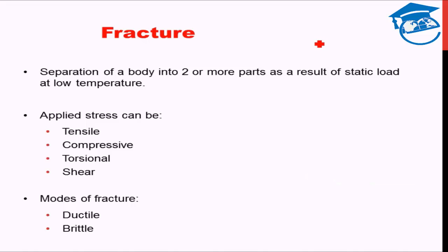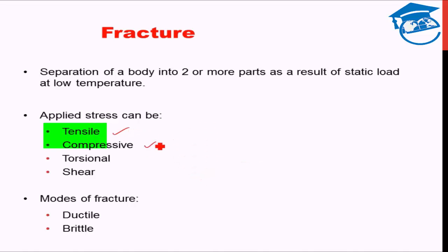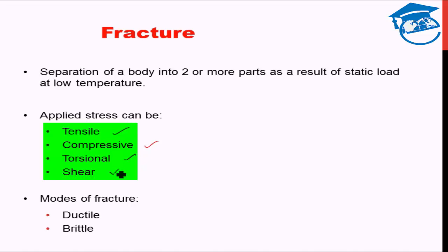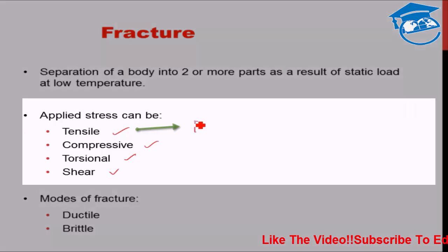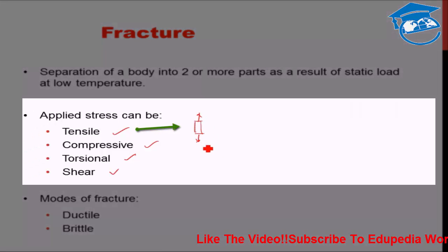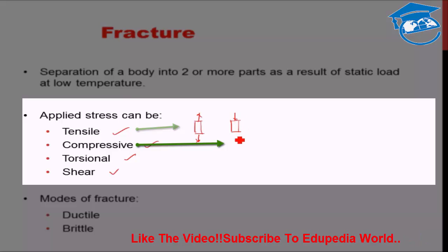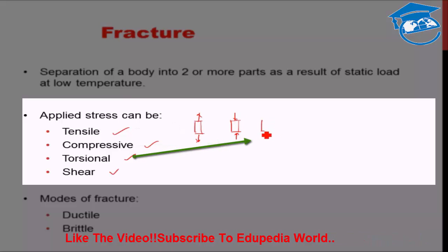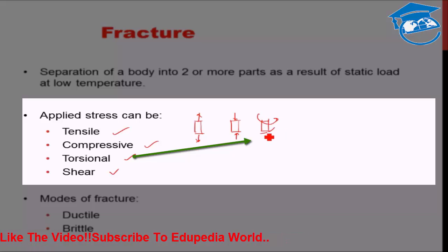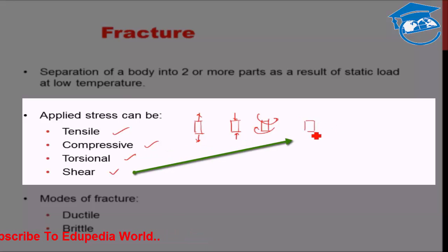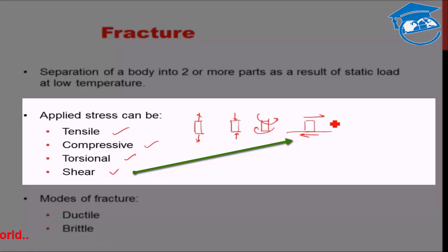The static load applied on the body can be of several kinds: it can be tensile in nature, it can be compressive stress, it can be torsional, or it can be shear. Compressive is when you try to squeeze the sample, torsional is when you try to rotate or turn the sample, and shear is when you apply forces parallel to the surfaces.